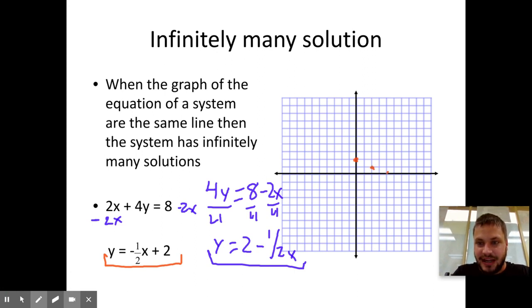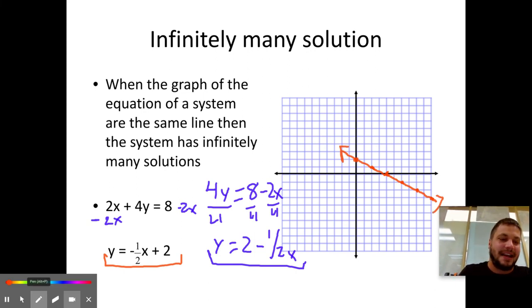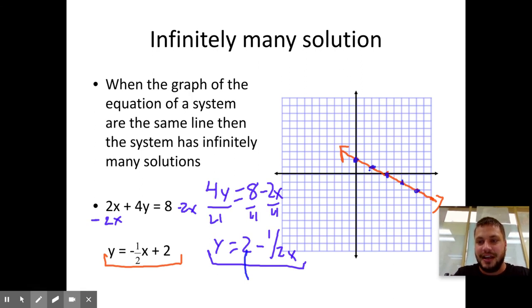So my red line has a y-intercept of 2, negative 1 half, down 1 right 2. It's negative, so I'm going down, but I'm still going to the right. I always run to the right. Down 1 right 2. So I got my red line here. Then I go to graph my blue line because I'm acting like, man, I don't notice that these two things are the same. I'm just going through the process here. Again, my y-intercept right here is 2, negative 1 half, down 1 right 2, down 1 right 2. Well, the answers where the two lines cross and look at this, the two lines lie right on top of each other.